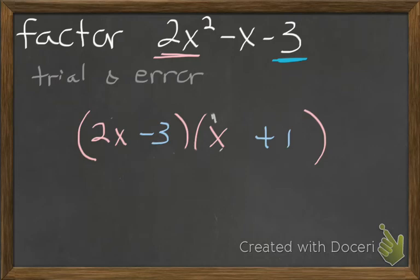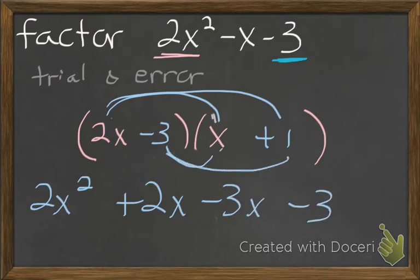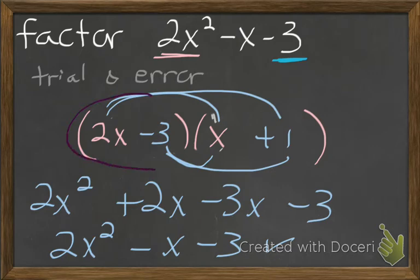Okay, so again, we'll FOIL this out. 2x times x, 2x squared. 2x times 1, 2x. Negative 3 times x, negative 3x. Negative 3 times 1 is negative 3. Now combining our like terms in this case, we have the negative x as our middle term, which is in fact our original, which means that our final solution is 2x minus 3 times x plus 1.